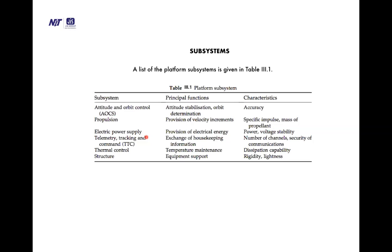Thermal control maintains temperature stability. As the satellite is a high-velocity moving body exposed to sunlight, temperature increases enormously. When in Earth's shadow, temperature decreases heavily — sometimes to large negative values. This fluctuation means temperature can swing between extreme heat in sunlight and extreme cold in shadow, so the satellite must be capable of maintaining thermal stability throughout these variations.